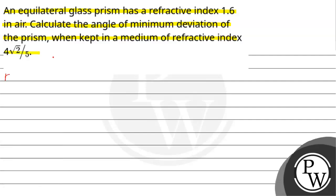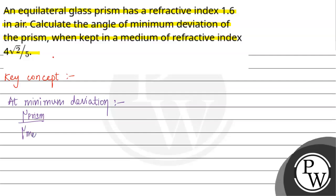Let us have the key concept of the given question. The key concept is that at minimum deviation, the ratio of refractive index of prism divided by refractive index of medium is equal to sin((A + δ_min)/2) divided by sin(A/2).